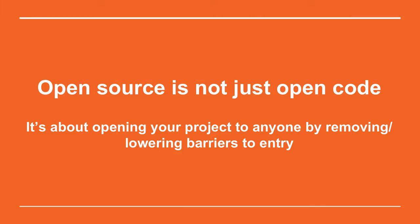So, in conclusion: open source is not just about open code. Open source is about making an open community — making sure that anyone can join your project. If you have a need for people who are more than just developers, you need to put that in your README. Document your code. It's about opening your project to anyone by removing or lowering barriers to entry. Real open source projects are open source because the code is open, the documentation is open, and anyone can help.